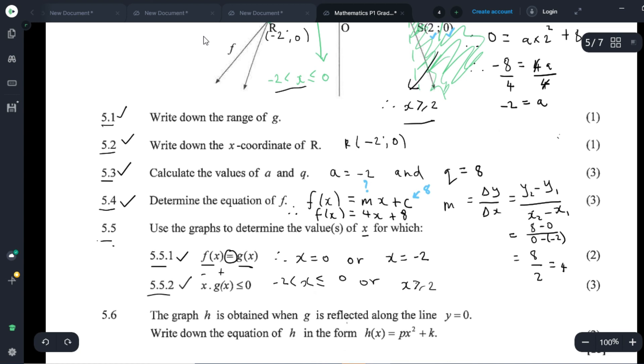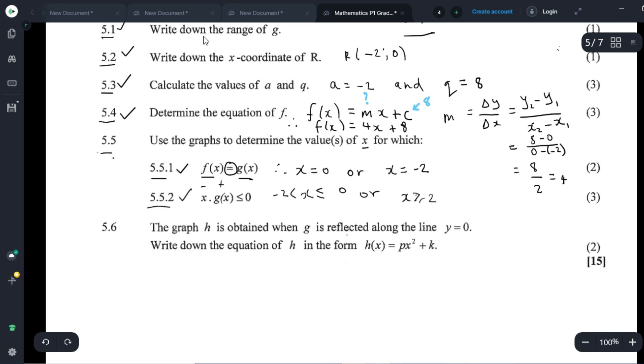So let's have a look at the last question, 5.6. The question is, the graph H is obtained when G is reflected along the line Y equals 0. Write down the equation of H in the form of H of X equals PX squared plus K. But you know, when they say Y equal to 0, they actually refer to the X axis. Y equals 0, in other words, is the X axis. So, in other words, we're looking for all negative G of X values because H of X is a mirror reflection of G of X.